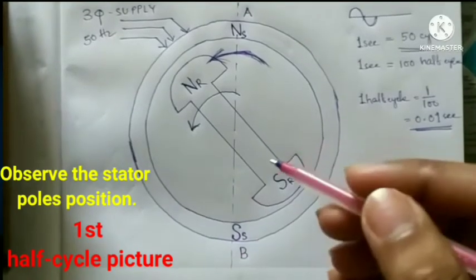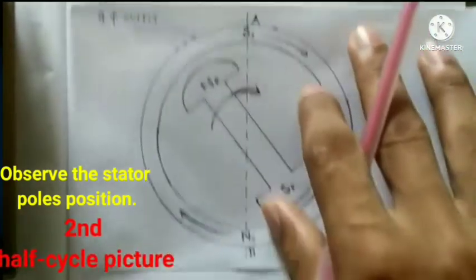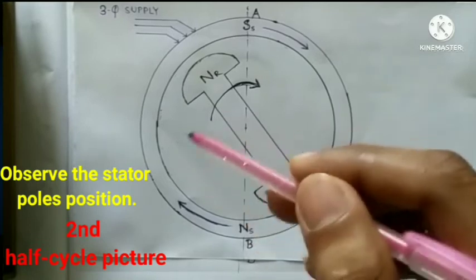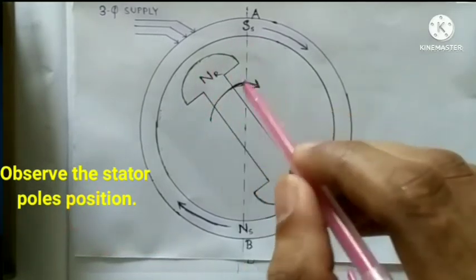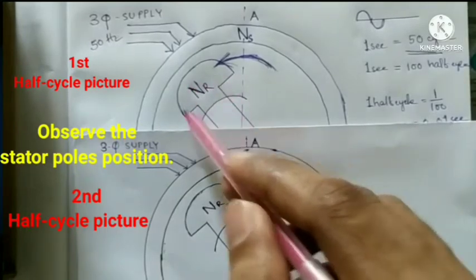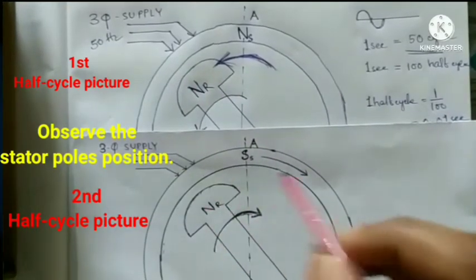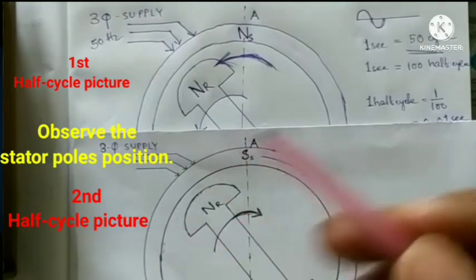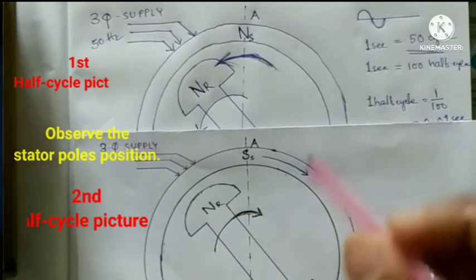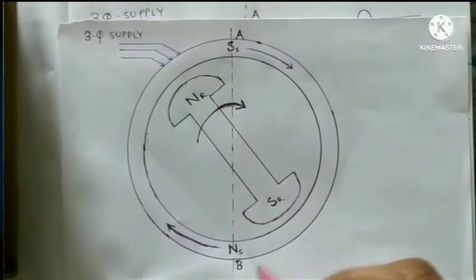After a period of one half cycle, NS has moved to the opposite position, but in the rotor, the pole has not changed. In the first half cycle, NR is in one position, and in the second half cycle, NR is still there. In the stator winding, however, the pole has changed — NS has now moved to the other side.